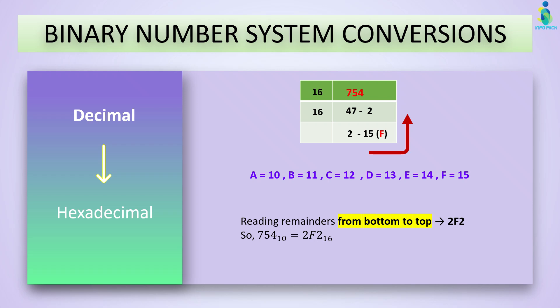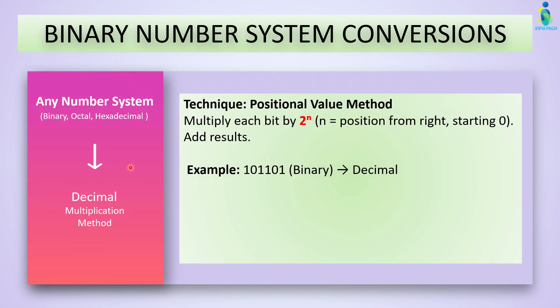Up till now we have converted from decimal to any number system: decimal to octal, decimal to binary, decimal to hex. Now let's learn how to convert from any number system to decimal. To do this we use the positional value method, also called the multiplication method. We multiply each bit by the base raised to the power of its position, counting positions from the right side, then add all the results.